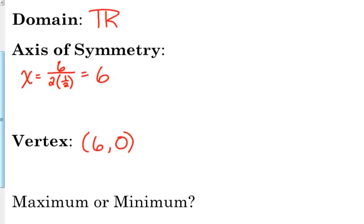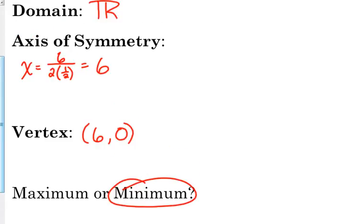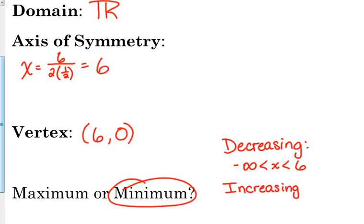Now, is this a maximum or a minimum? Minimum. Okay, and it's a minimum value. So our function starts by decreasing. It decreases first from negative infinity until we get to our vertex of 6, and then it's increasing from 6 to infinity.